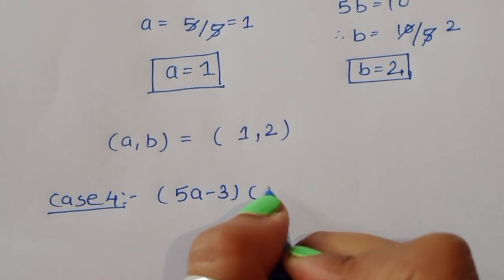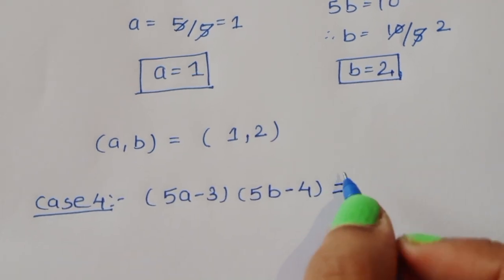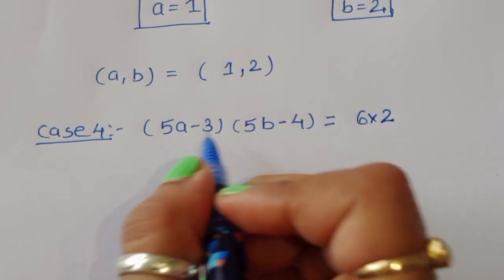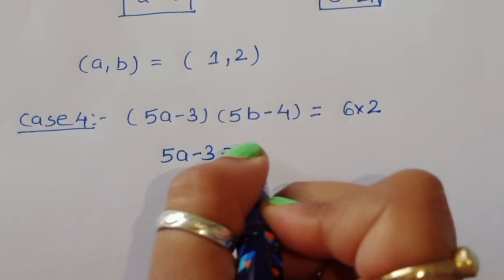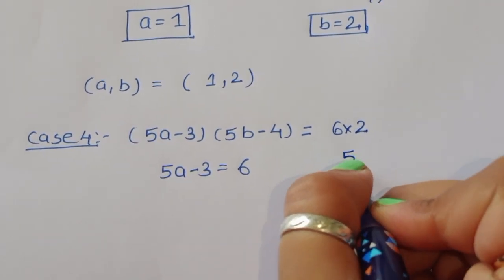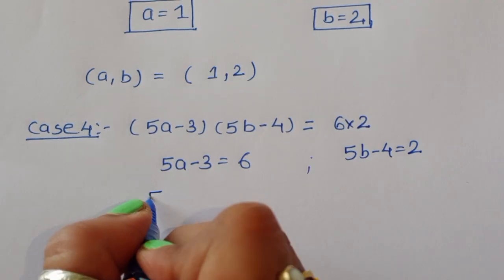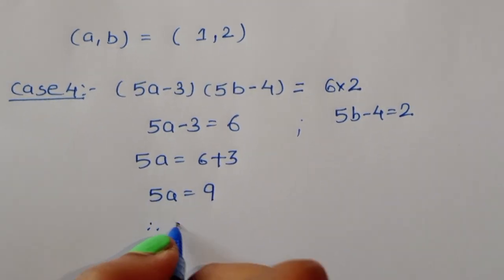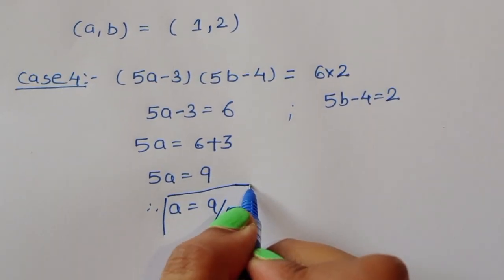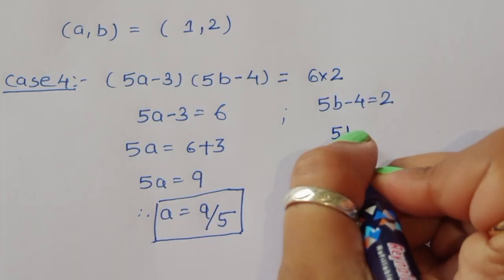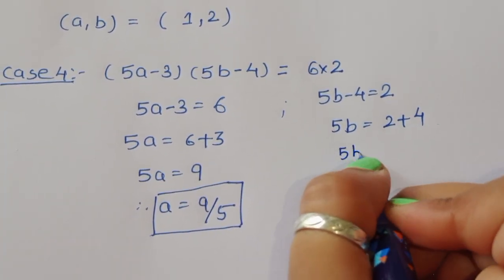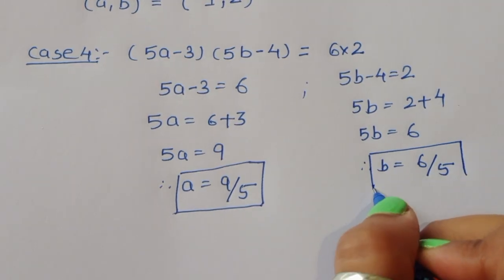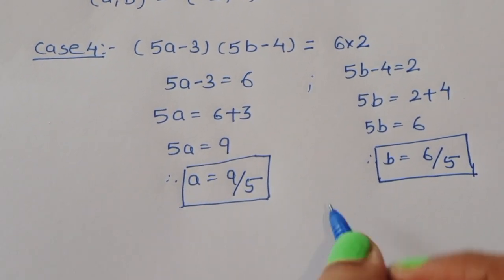Case 4: (5a-3)(5b-4) = 6×2. So 5a-3=6 gives a=9/5, and 5b-4=2 gives b=6/5. Since these are not integers, Case 4 is rejected.